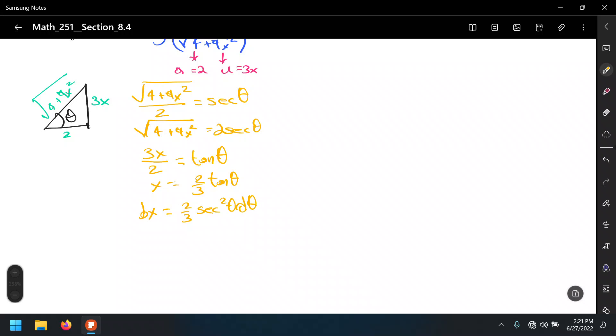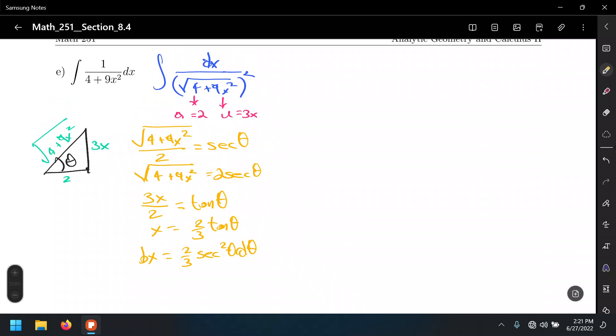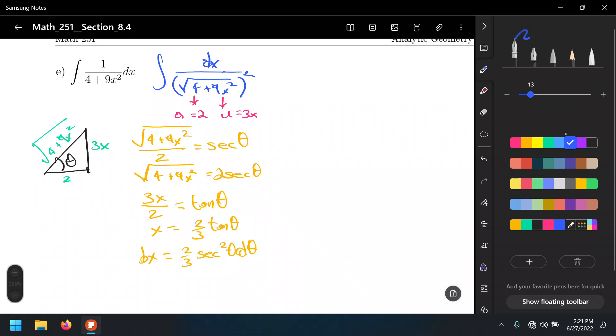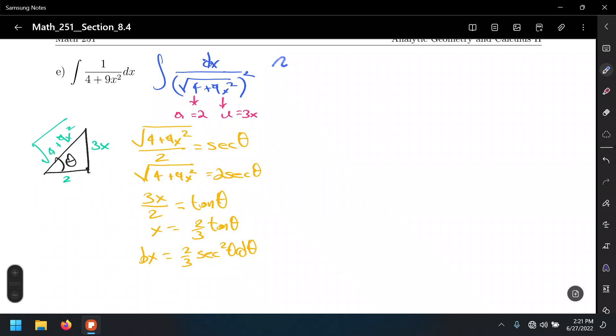And we got everything we need, so let's go back to the original integral. Looks scary but trust me, this is going to simplify really nicely. That's the integral of the radical which happens to be 2 secant times the dx where the dx is two-thirds secant squared dθ.